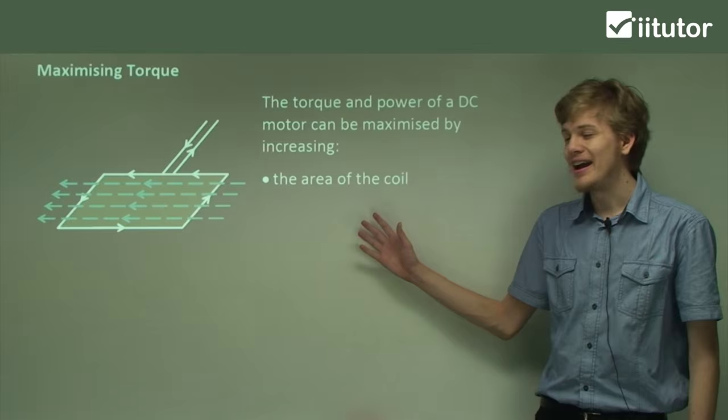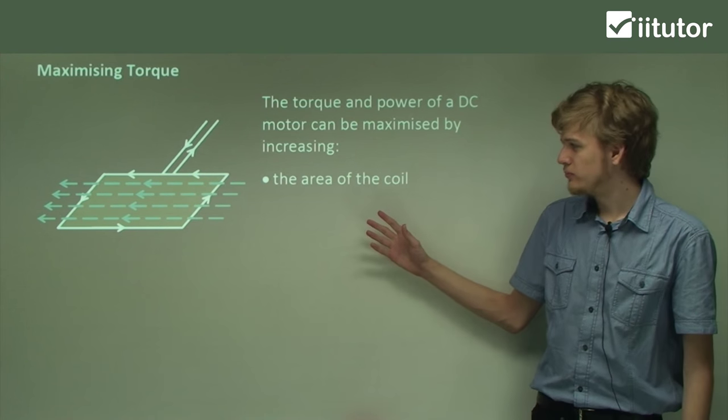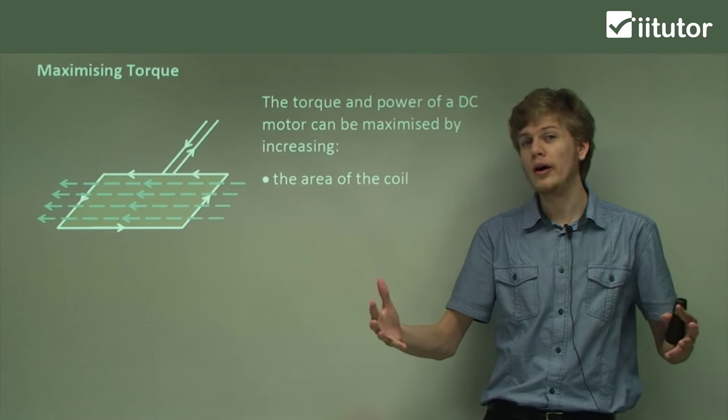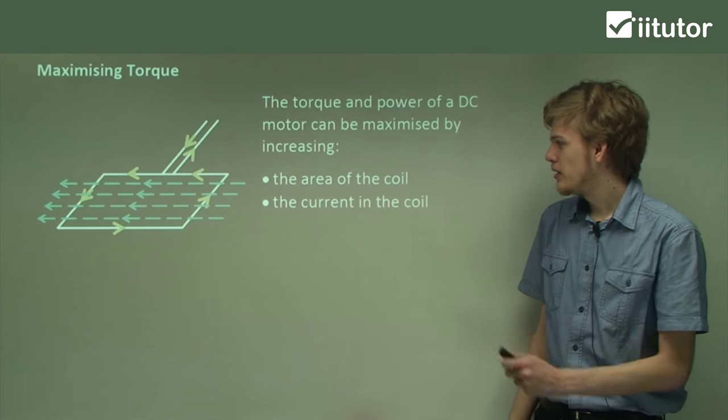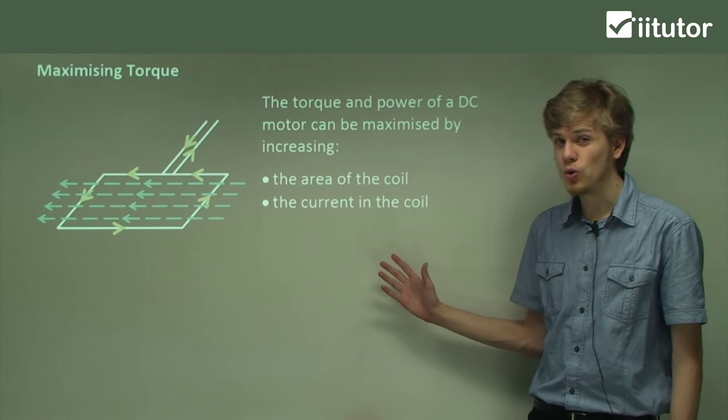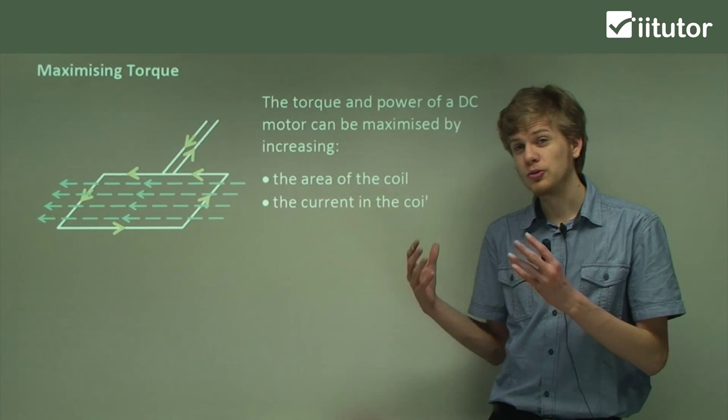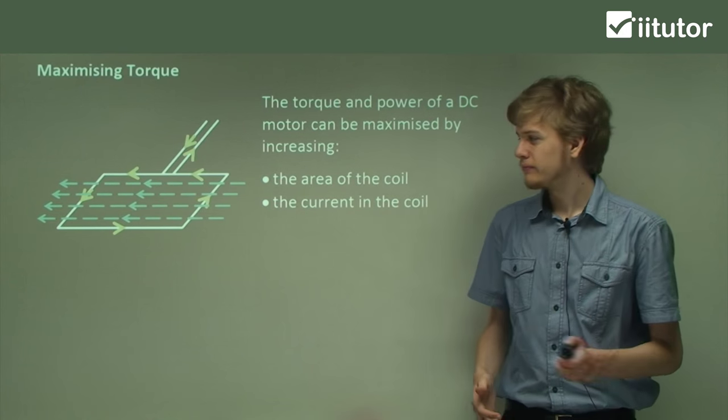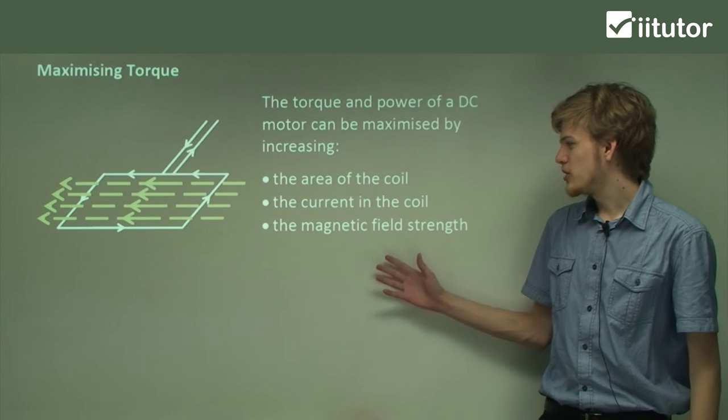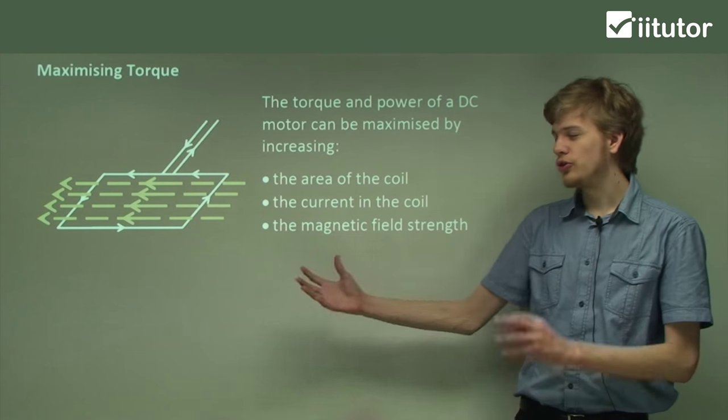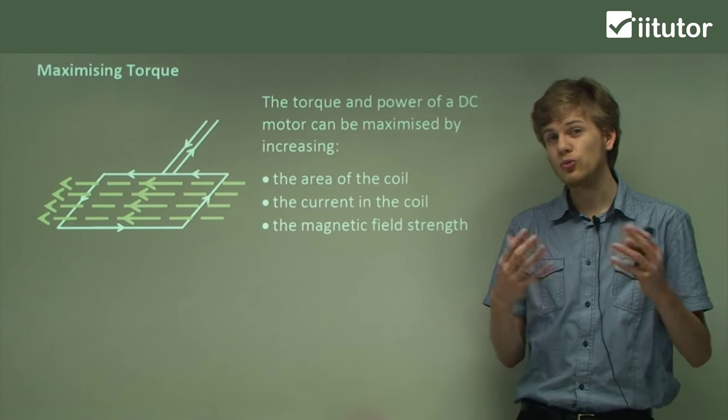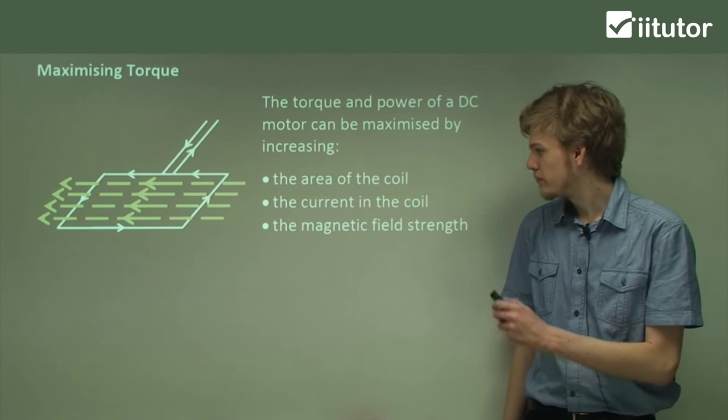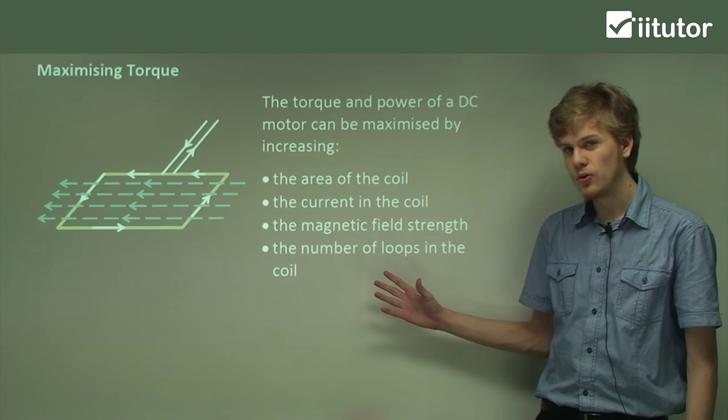We can increase the area of the coil, that is, make the coil longer or wider or both. We can increase the current in the coil, so that's the amount of electrical current passing through it. We can increase the magnetic field strength that moves across the coil, because this will create a greater motor force. Or we can increase the number of loops in the coil.